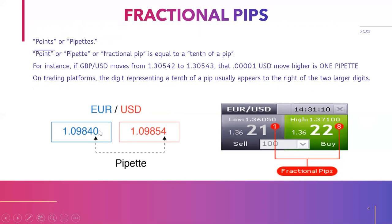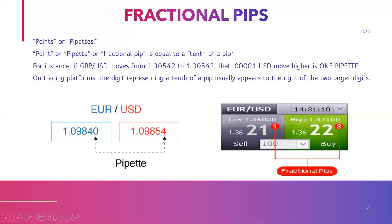If we are trading the EUR/USD and we are in a sell, this pipette is one tenth of a pip. The number five is the pip, and the number four is the pipette, which is one tenth of the pip. So if we are in a sell on EUR/USD, this pipette will be going down — if it moves by 0.00001, the pipette will go to three. But if it moves 10 pipettes, that is one pip.